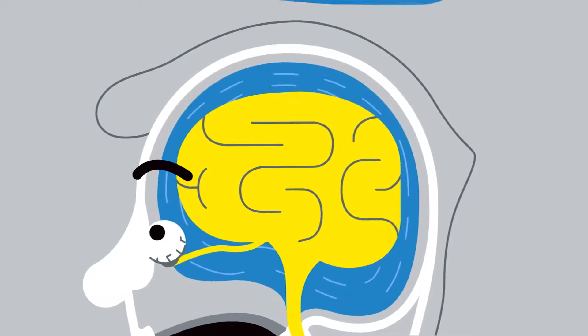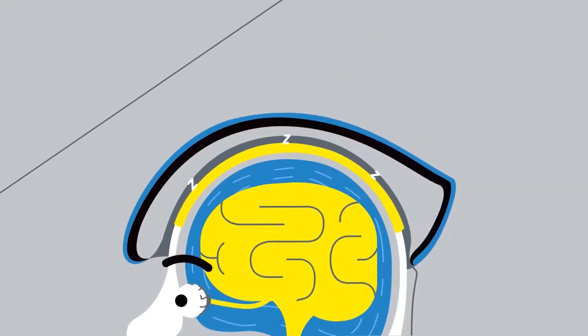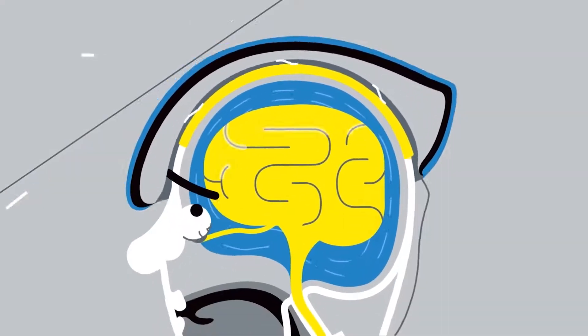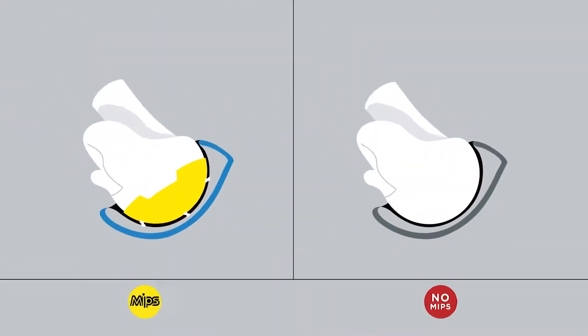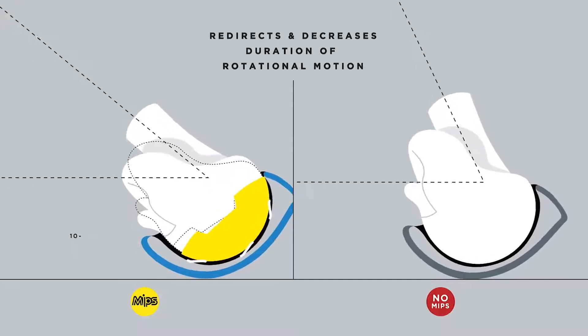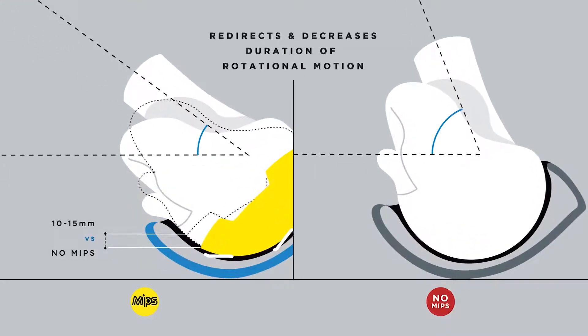MIPS offers an additional measure of protection and is designed to help protect your brain tissue in an impact by decreasing the duration and strength of the strain. When the MIPS low friction layer moves during the critical milliseconds of an impact it redirects and decreases the duration of the rotational motion translated to the brain.